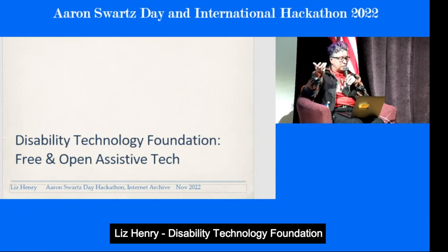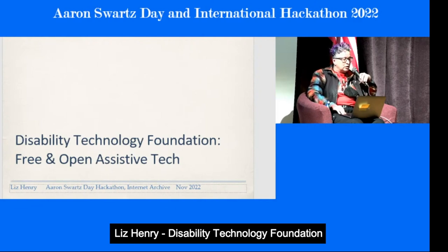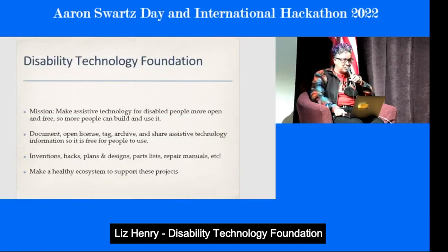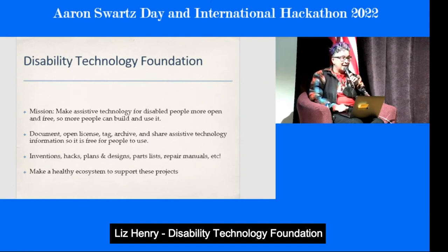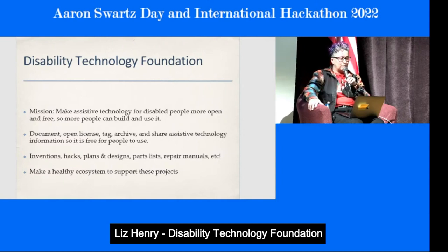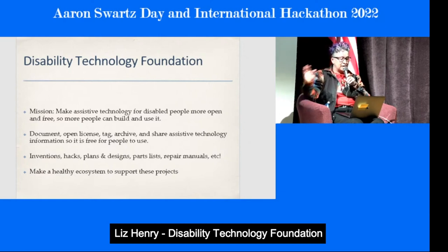Assistive technology information should be free for people to use. This would include inventions — like if somebody were to invent a fabulous open source power chair design — hacks, everyday hacks that you use, plans and designs to build things that are useful for disabled people or people with chronic illnesses, parts lists, repair manuals, anything you can imagine like that.